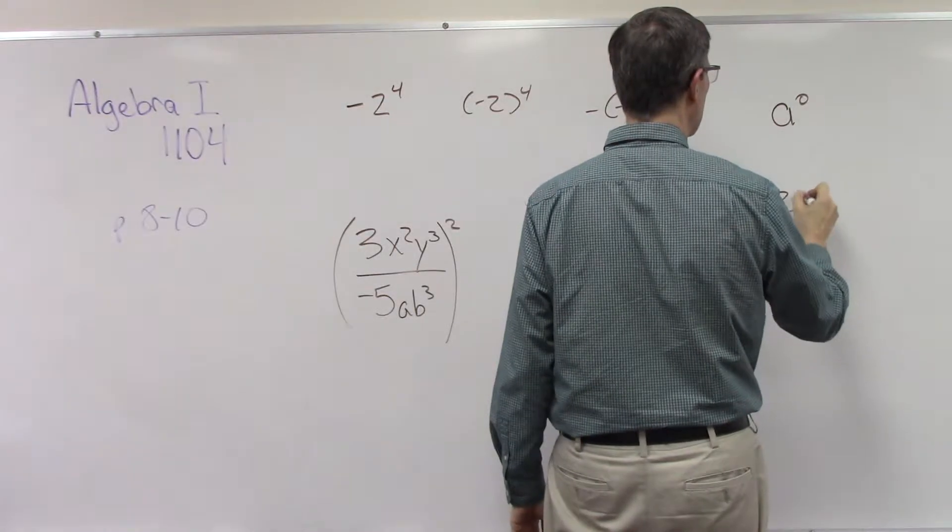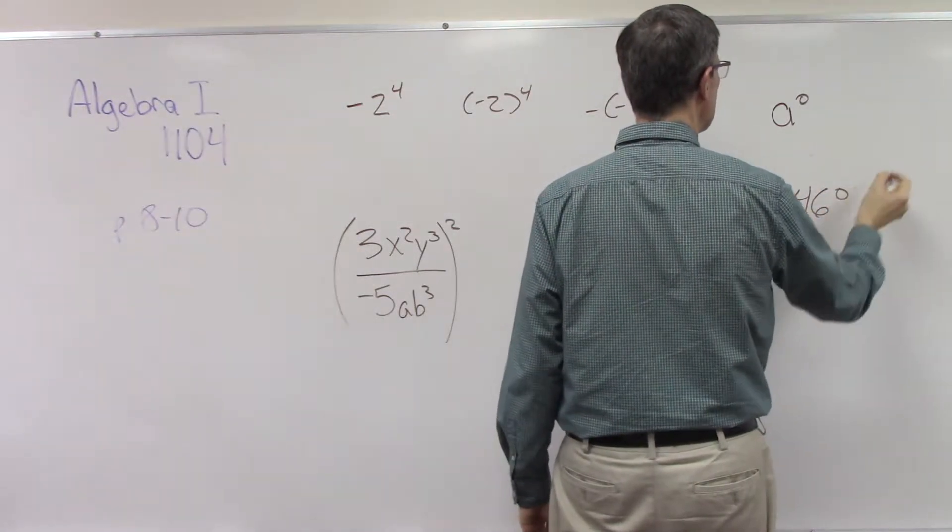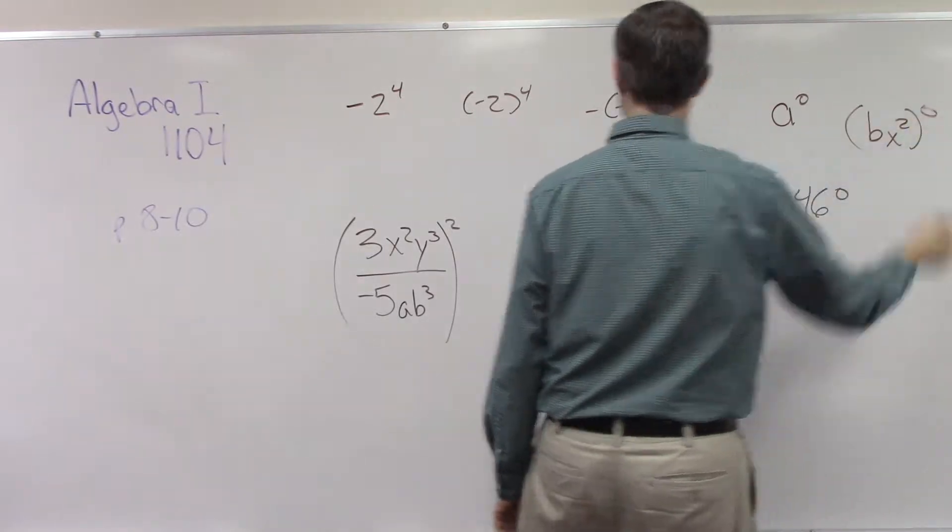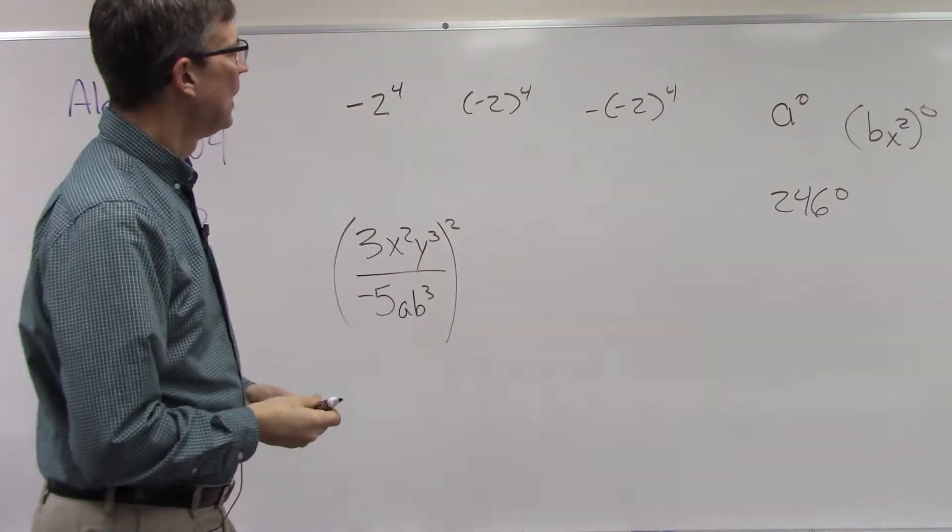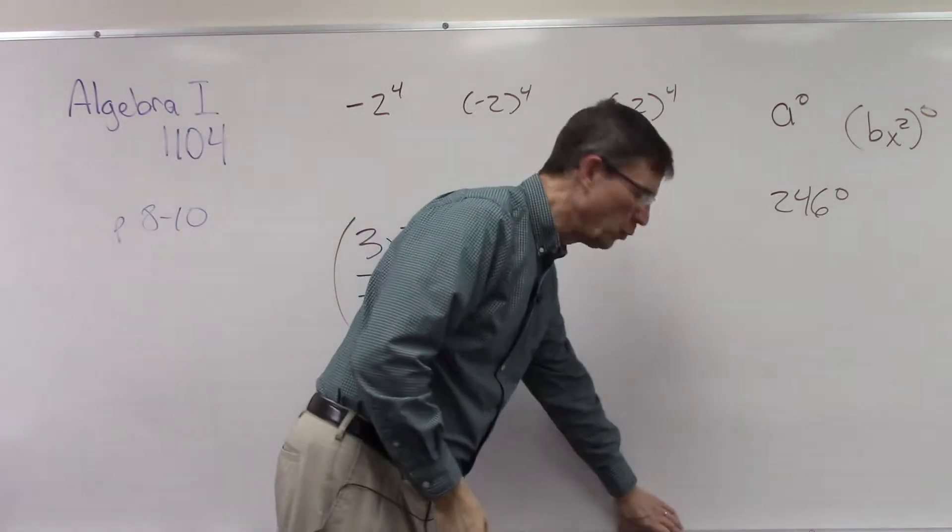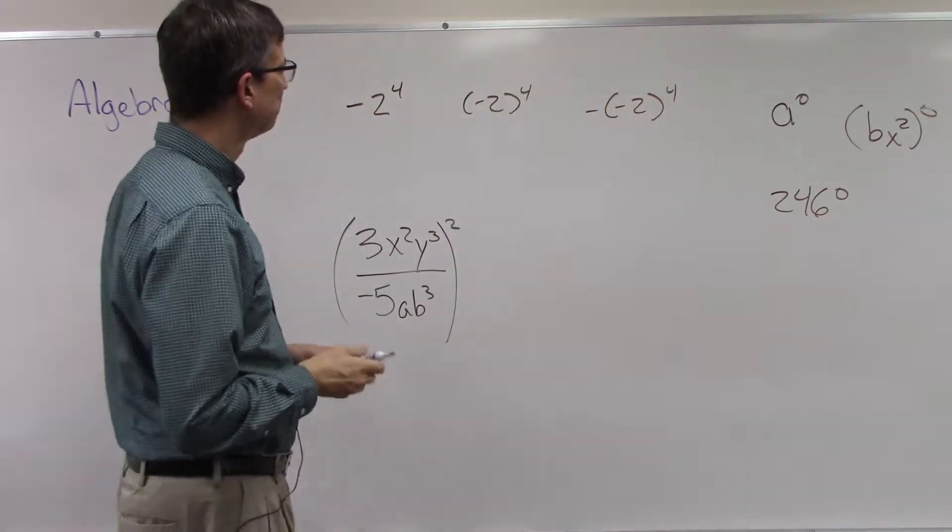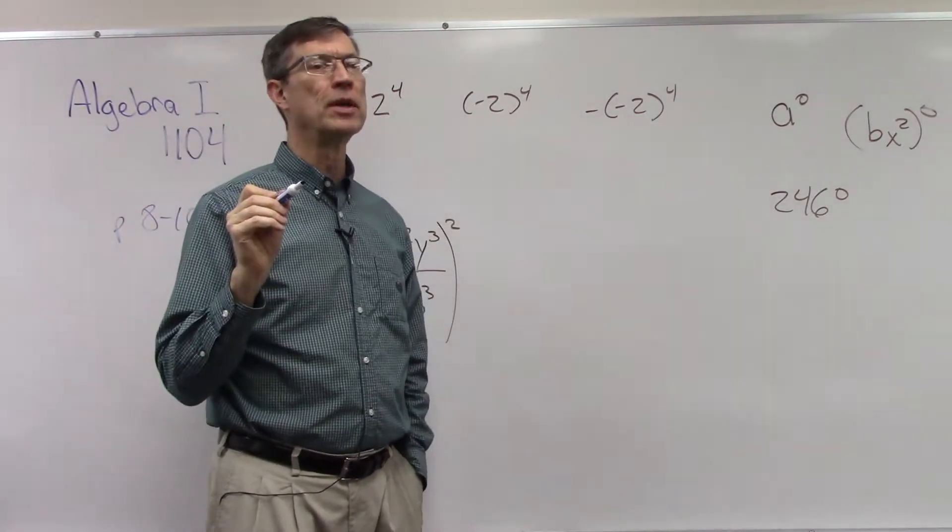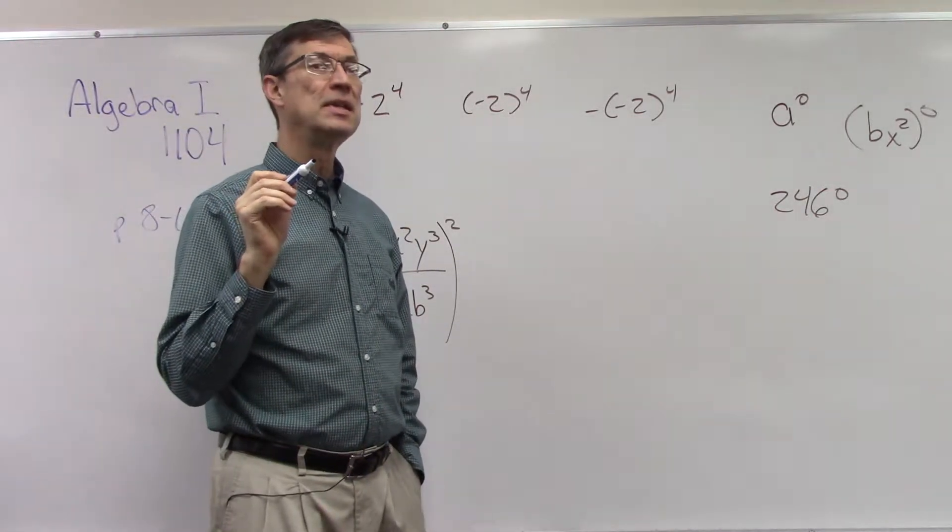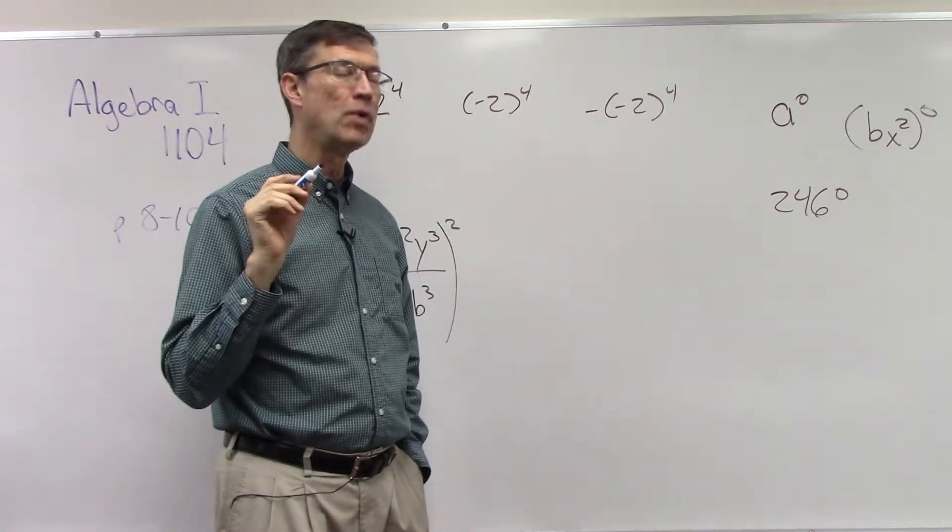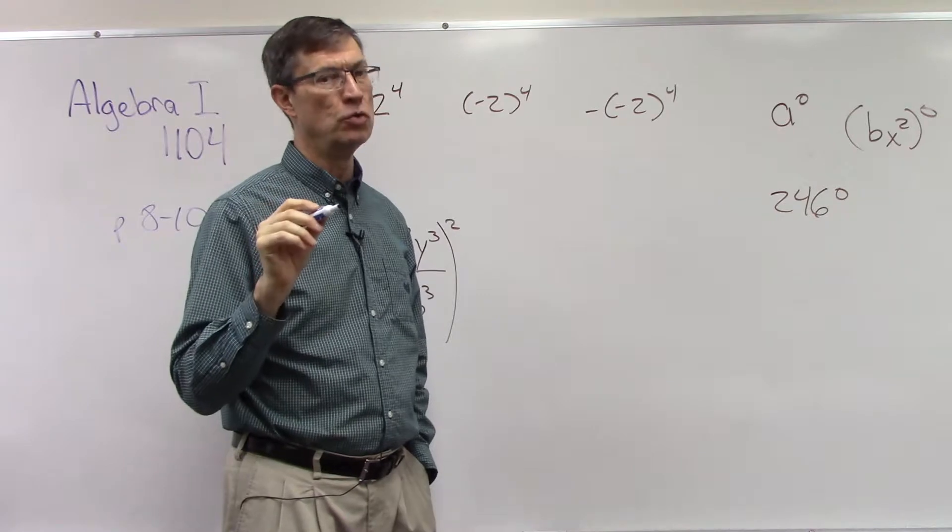a to the 0, 246 to the 0, bx squared, the whole thing raised to the 0. We'll talk about those in a minute. I want to talk about what do we do with negatives when we're using exponents? I always like to tell my students the best way to think of it is that the exponent only affects the thing that it is directly attached to.